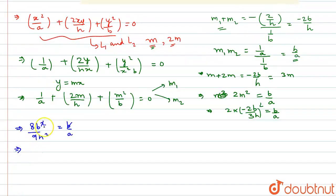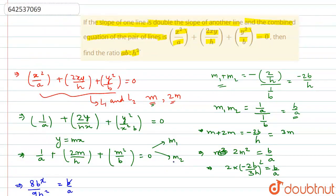Simplifying, we get 8ab = 9h², or ab/h² = 9/8. Therefore, the ratio ab:h² = 9:8, which is our required answer.